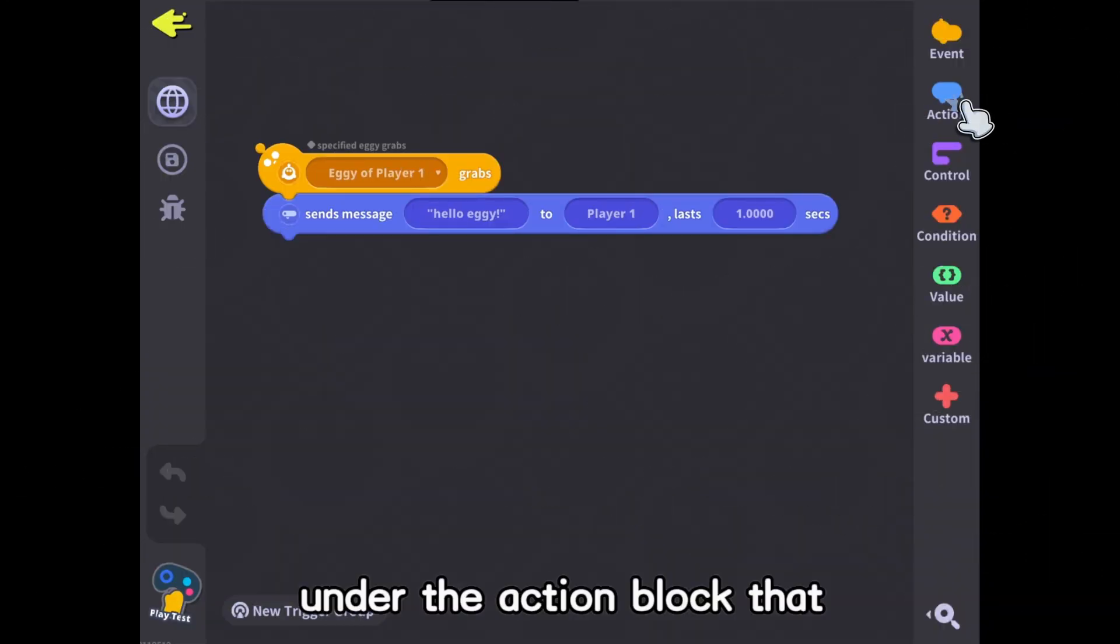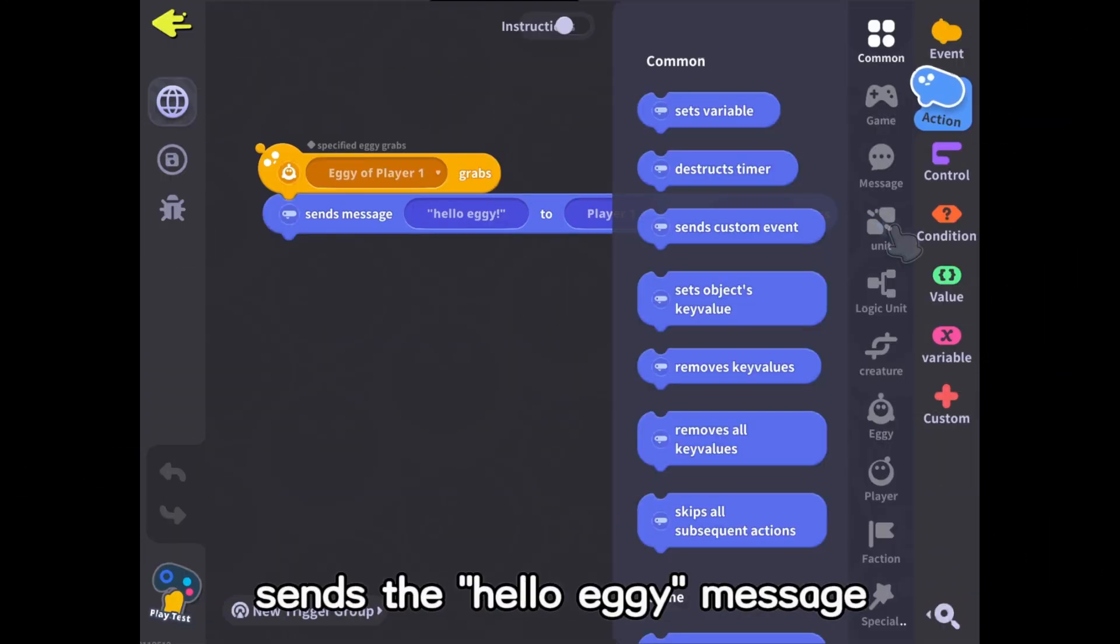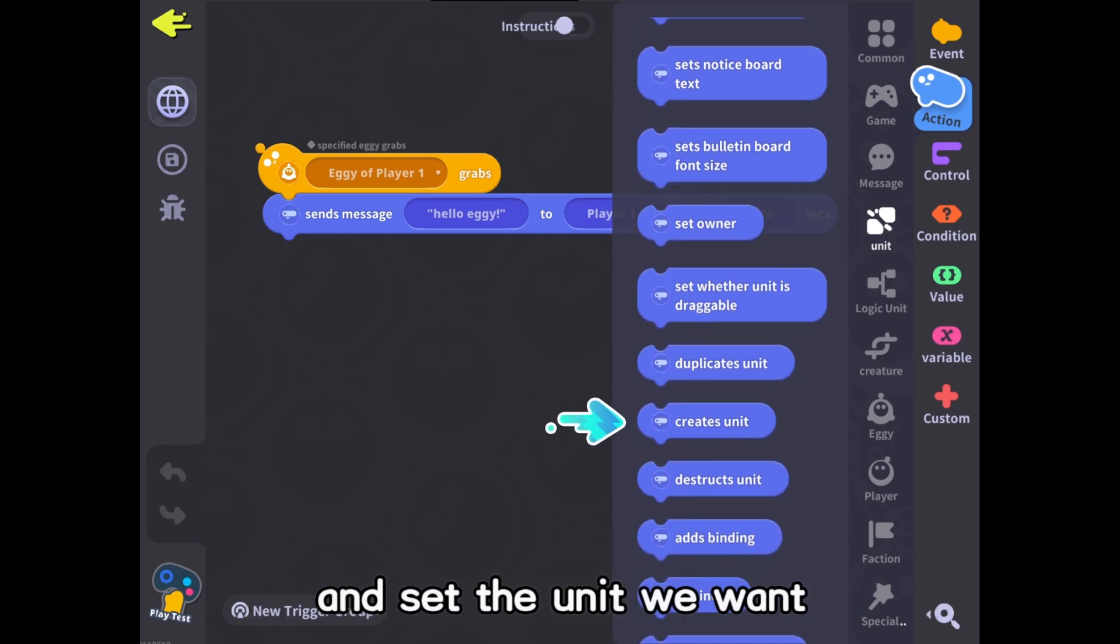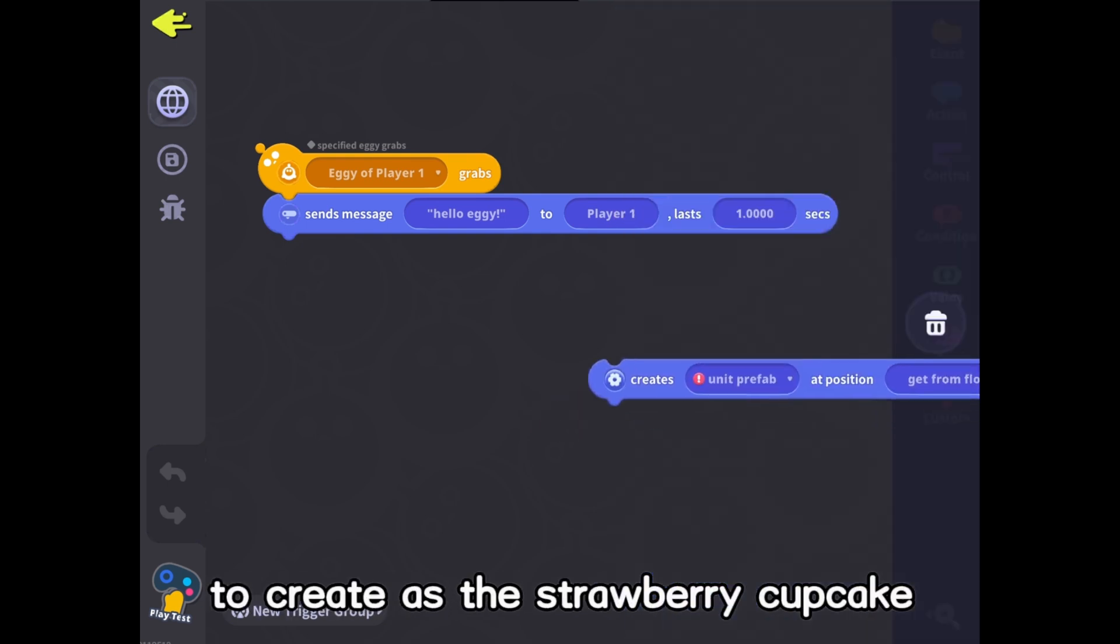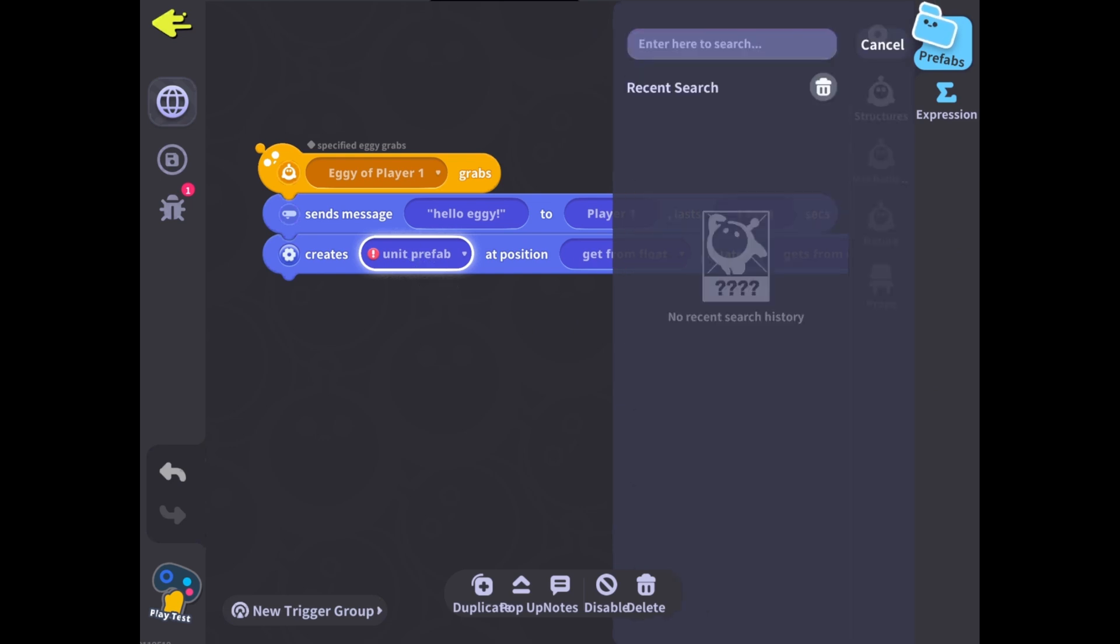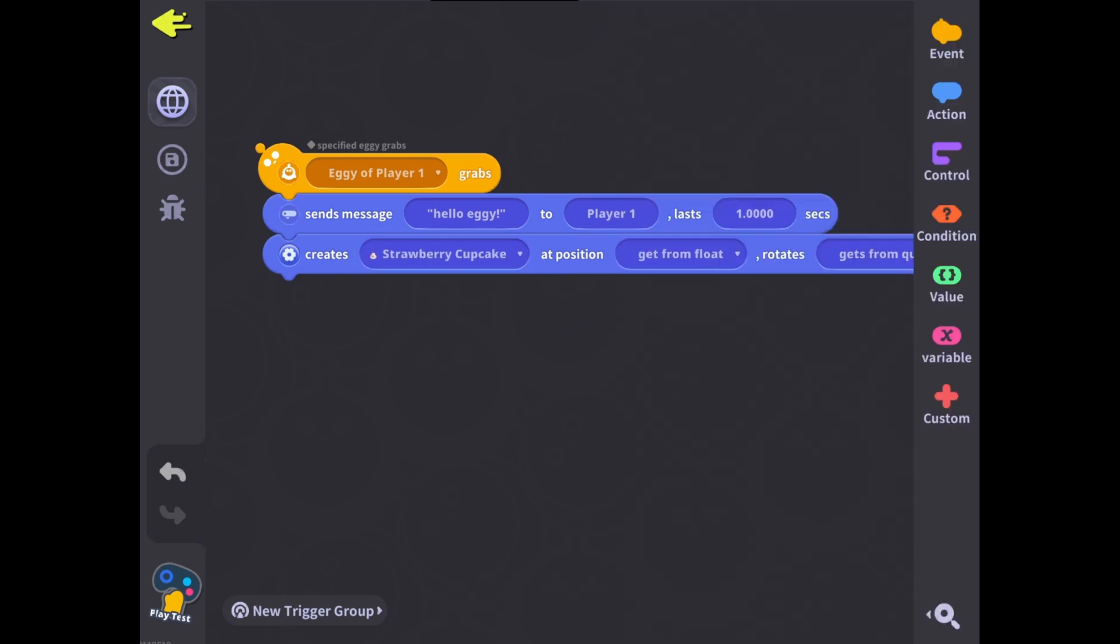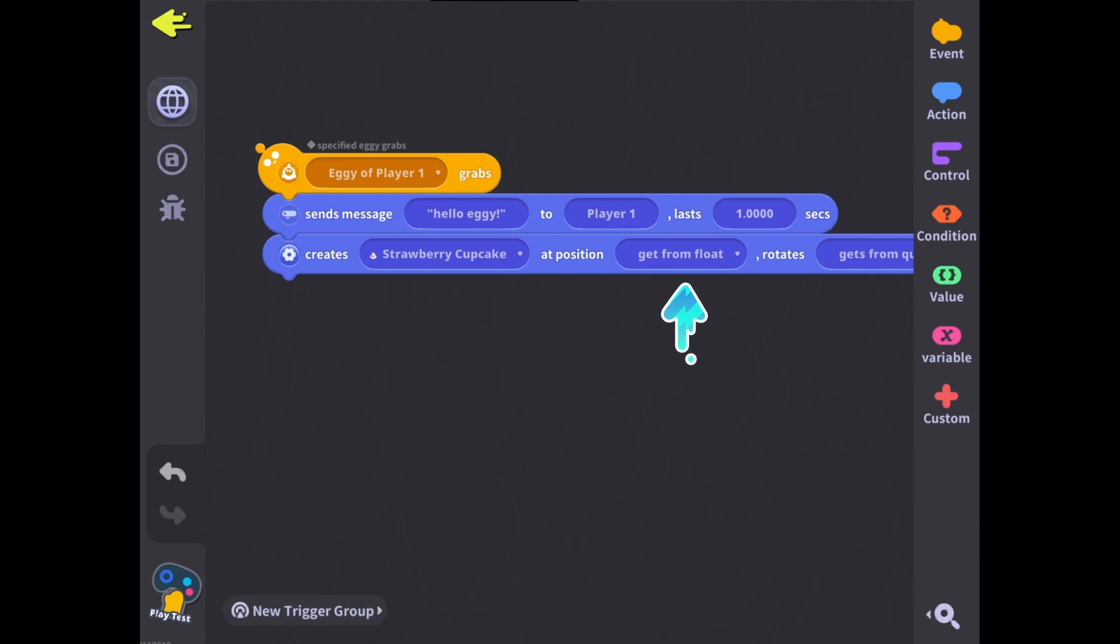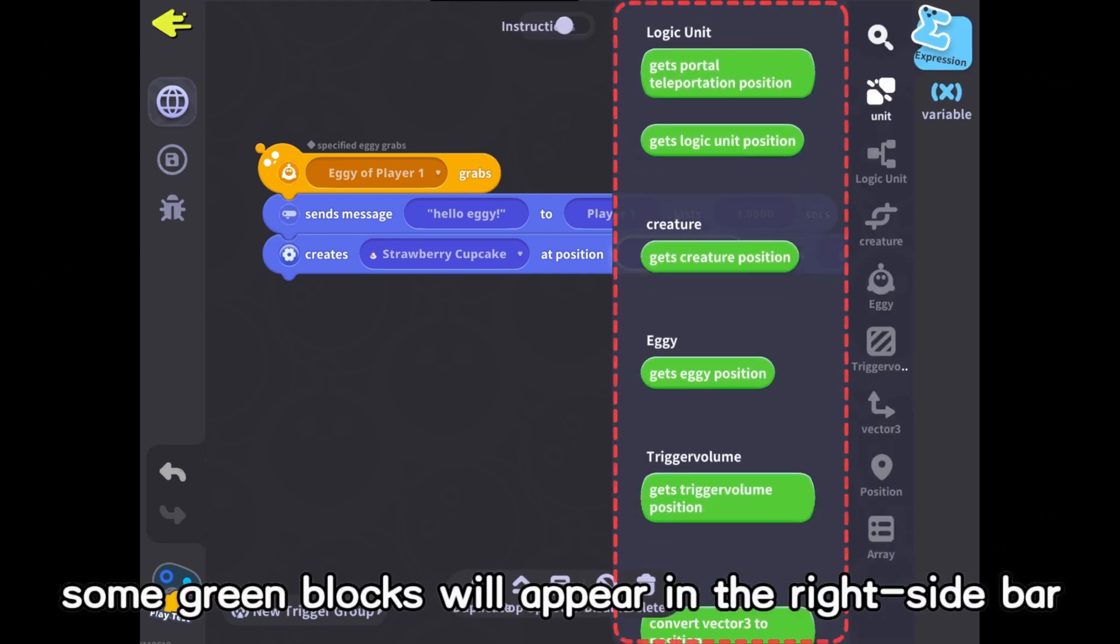First, under the action block that sends the Hello Eggie message, let's add a Create Unit block and set the unit we want to create as the strawberry cupcake. When creating the unit, we need to specify the exact location. How do we get this coordinate? By selecting this blank space, some green blocks will appear in the right sidebar. These are value blocks.